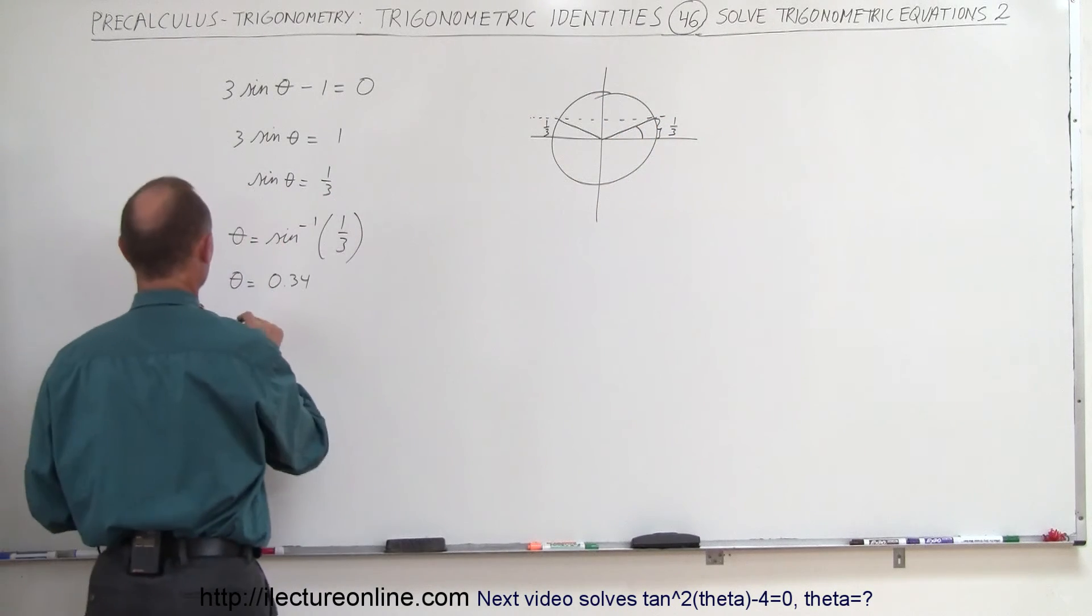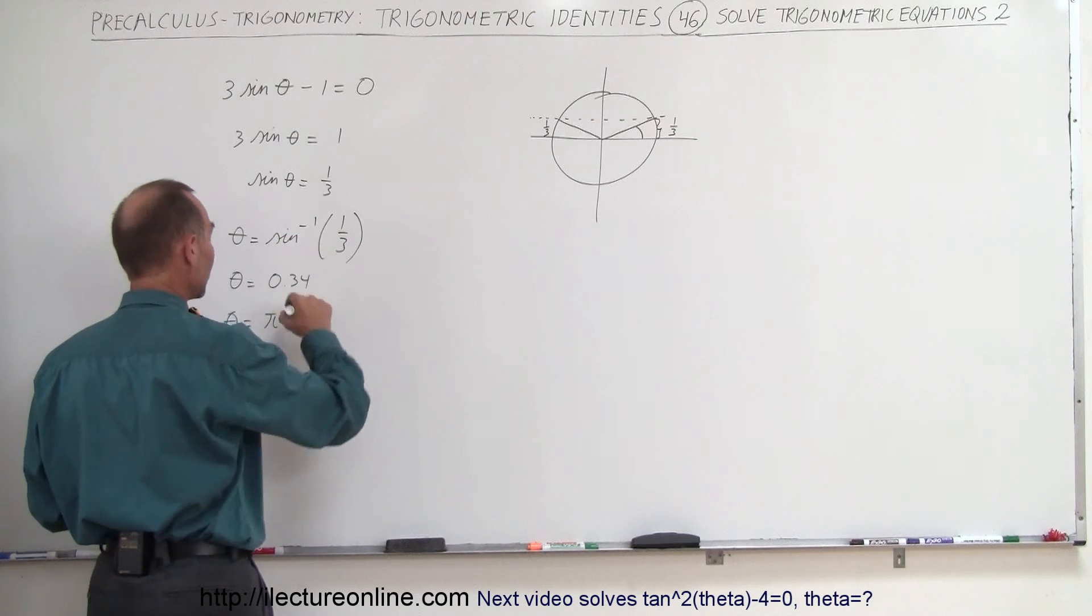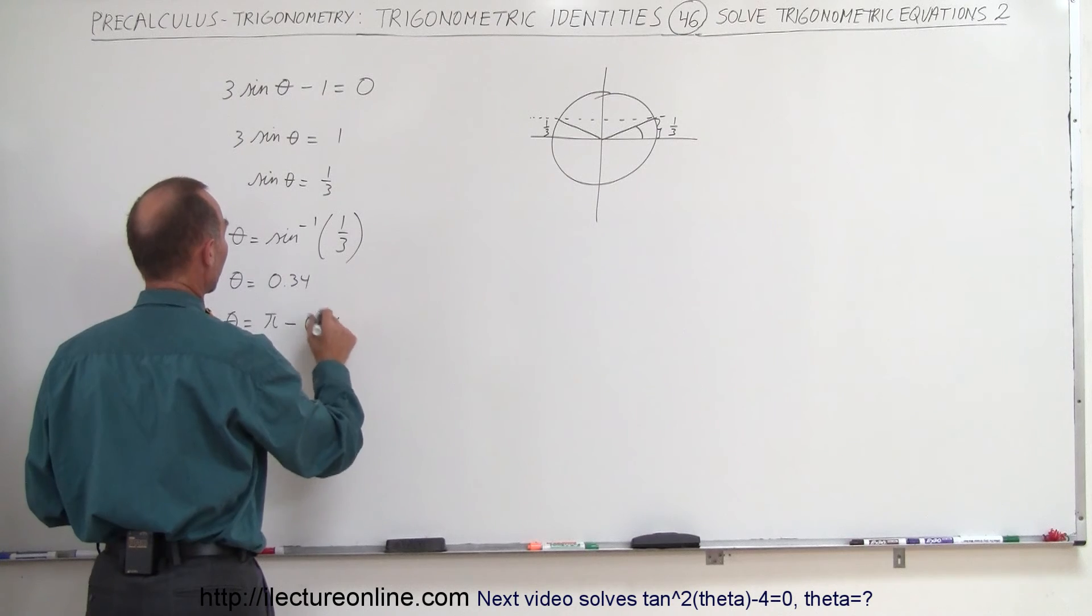Now we also want that angle there so then theta can also be equal to pi which is 180 degrees minus 0.34. So those would be the two possible answers to satisfy that particular equation.